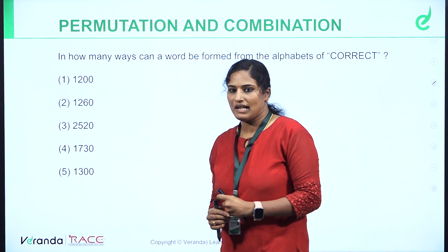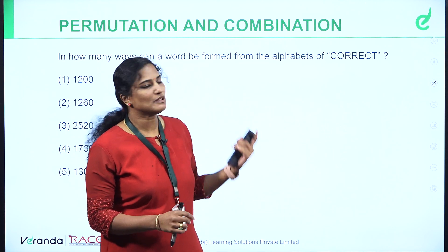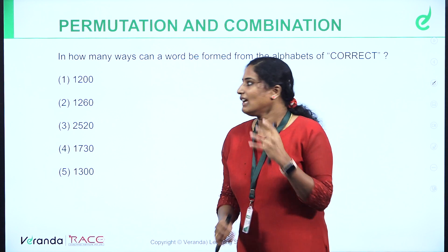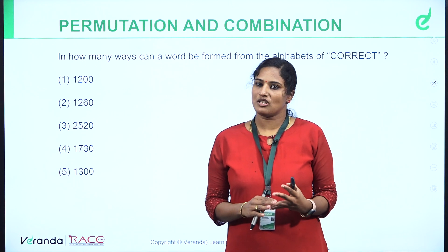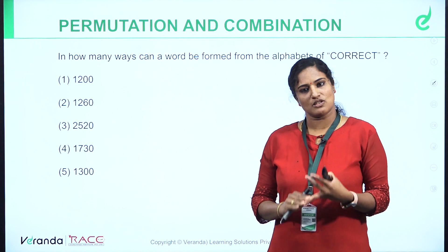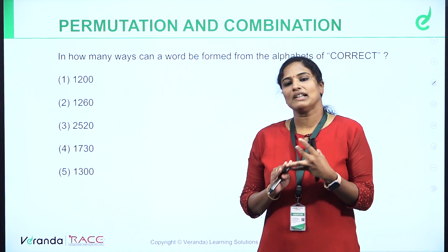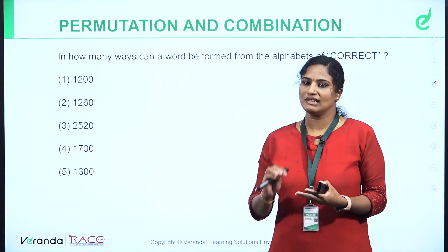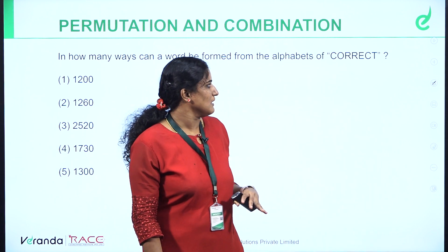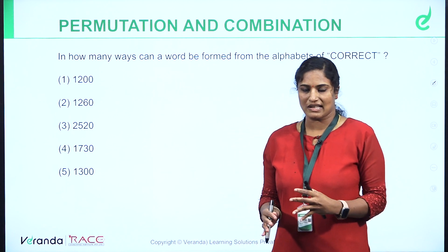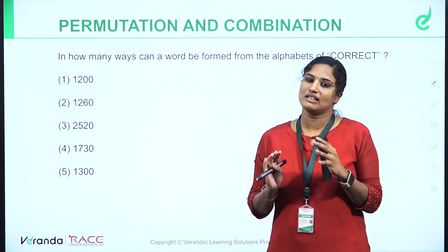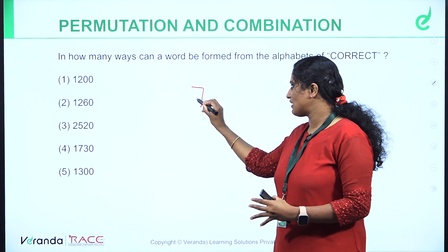How many ways can we arrange the alphabets of the word? Correct! How do we arrange the alphabet? First question. Is it permutation or combination? It is permutation — number of ways to arrange the alphabet. The word is C-O-R-R-E-C-T, which has 7 letters, so the answer is 7 factorial. There is no special criteria — just arrange it. The answer is 7 factorial.